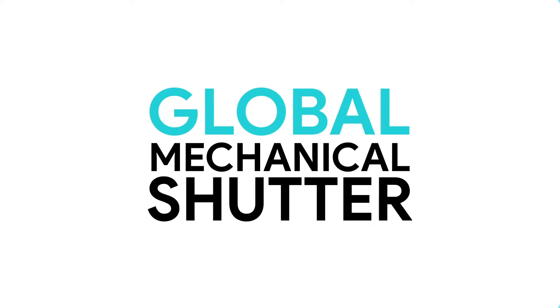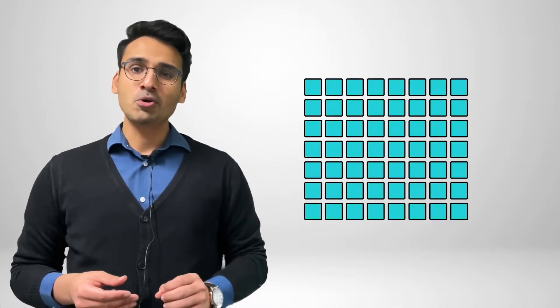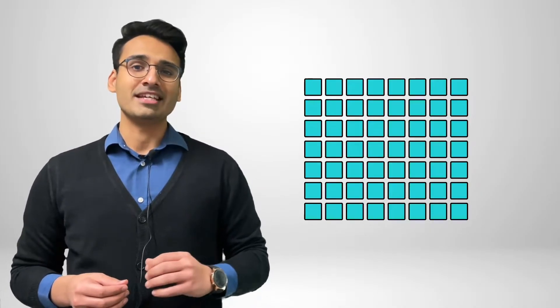Now let's move on and have a look at the difference between global and rolling shutters. We'll start by looking at global mechanical shutters. A global mechanical shutter as the name implies is a mechanical part of the camera that opens and closes at a predefined shutter speed. Global shutters ensure that each image on the image sensor is exposed to the light exactly at the same time.